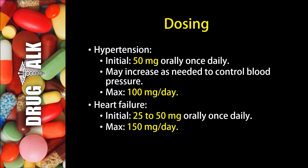Now what about dosing with Losartan? In the treatment of hypertension or high blood pressure, the initial dose would typically be 50 mg orally once daily. The patient may increase the dose as needed to control blood pressure, under the instruction of their physician. The maximum dose would be 100 mg per day. In heart failure, for example, the initial dose would be 25 to 50 mg orally once daily and the maximum dose in this setting would be 150 mg per day.